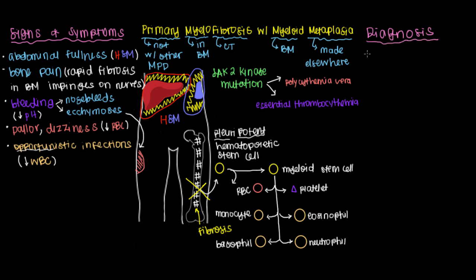Now, how do we diagnose this? Well, one of the first things you can do is get a complete blood cell count, and you'll notice that you have a decreased number of red blood cells and platelets. You may also have an increased number of immature white blood cells.